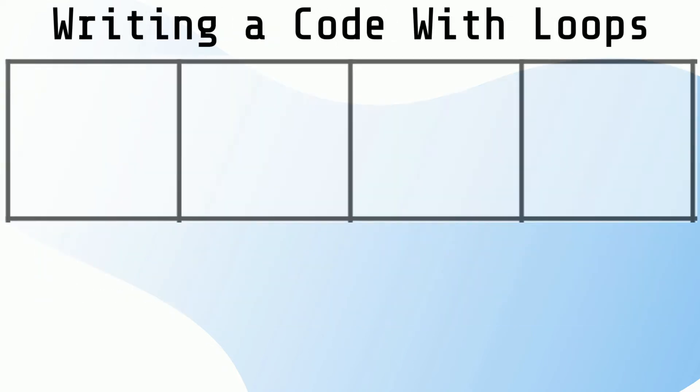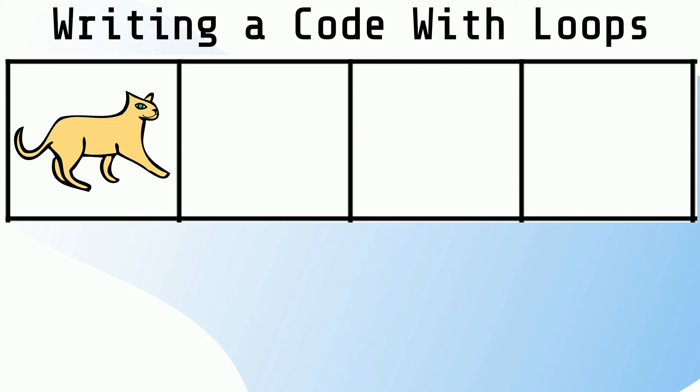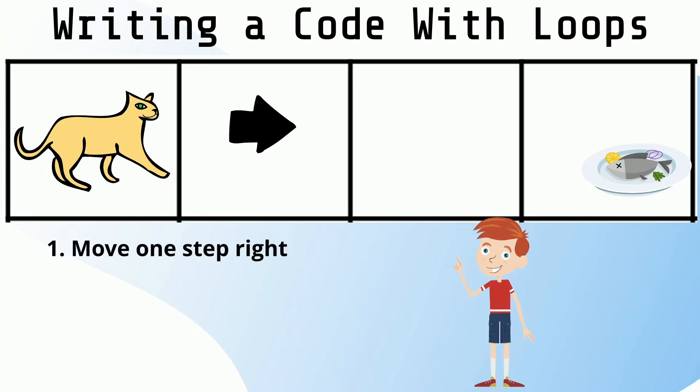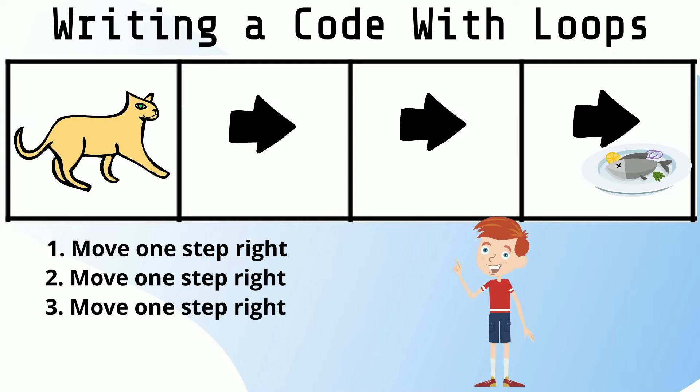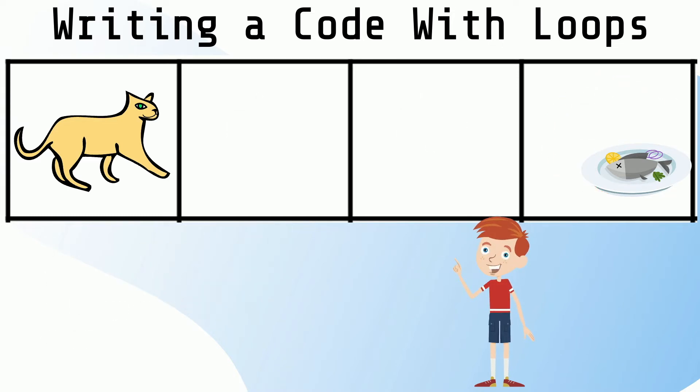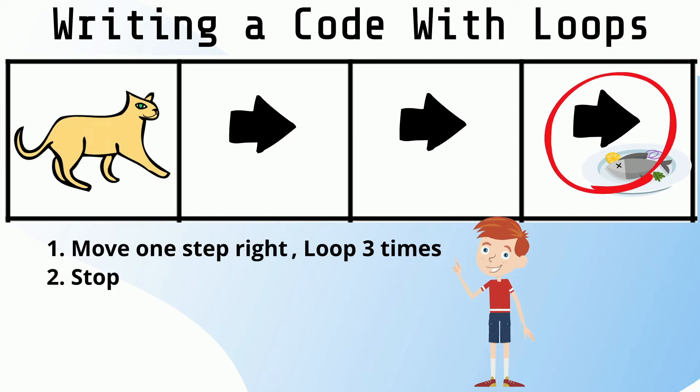Let's take a look at how we can use coding and loops to make this cat move. I want the cat to move three steps to the right to get to her cat food. I will need to code a specific step-by-step set of instructions. This is what my algorithm would look like without a loop. Now, I will add a loop to make my code easier to read and write. This is what my algorithm would look like with a loop.